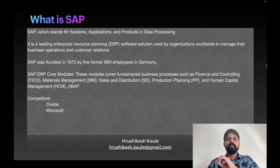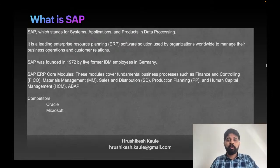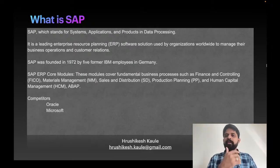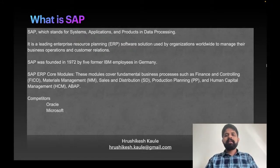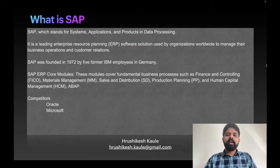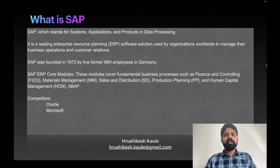The basic modules implemented in almost all companies are FICO — Finance and Controlling. Then we have MM (Materials Management), which handles procurement and inventory management. Then SD (Sales and Distribution) for selling. Then PP (Production Planning), which handles manufacturing. And HCM (Human Capital Management) — basically HR. One module is ABAP, which is technical.